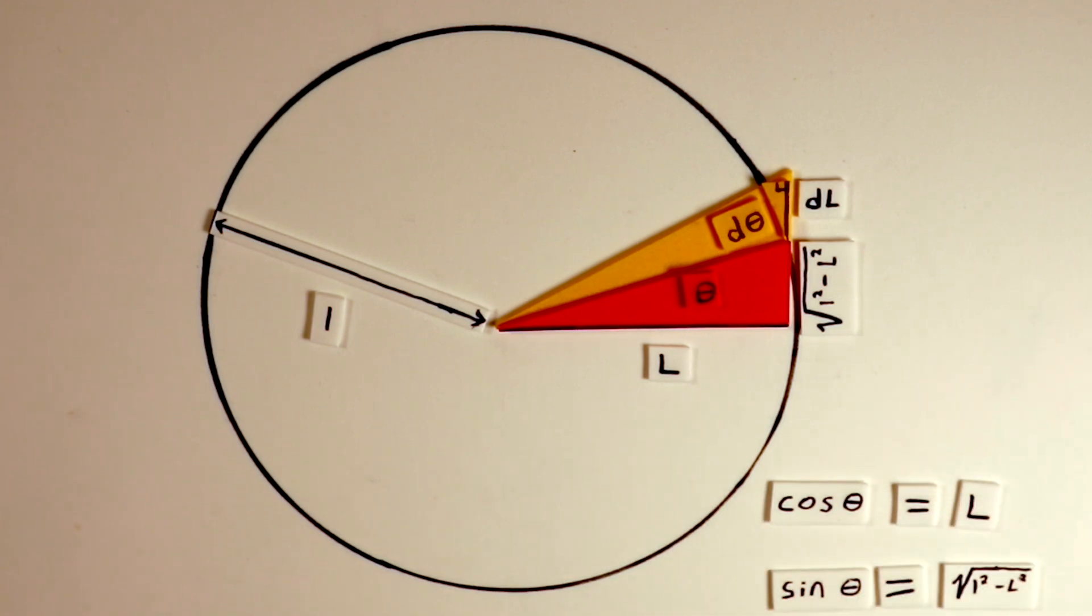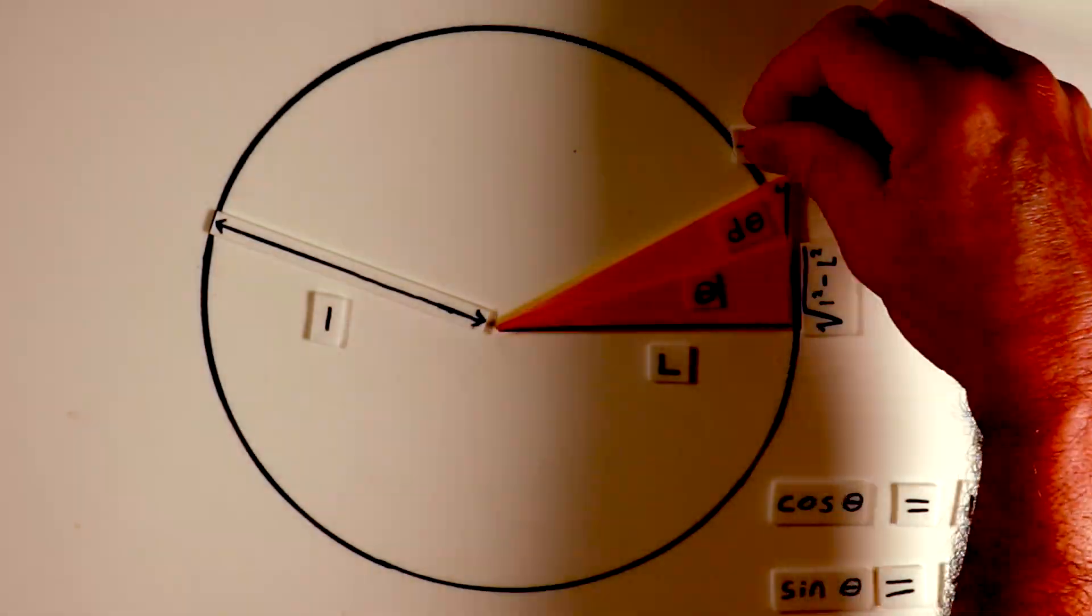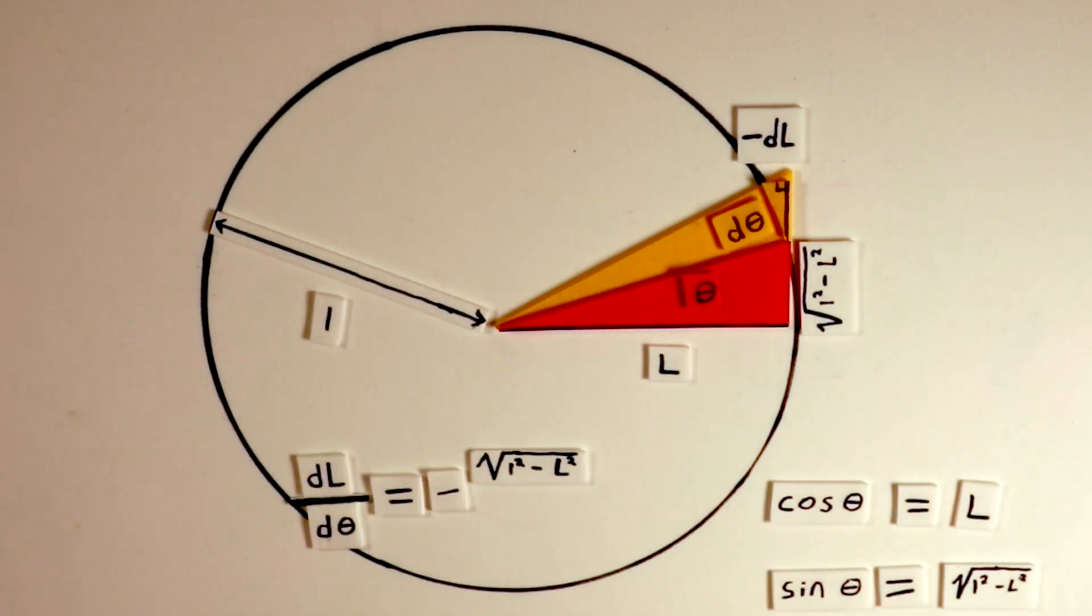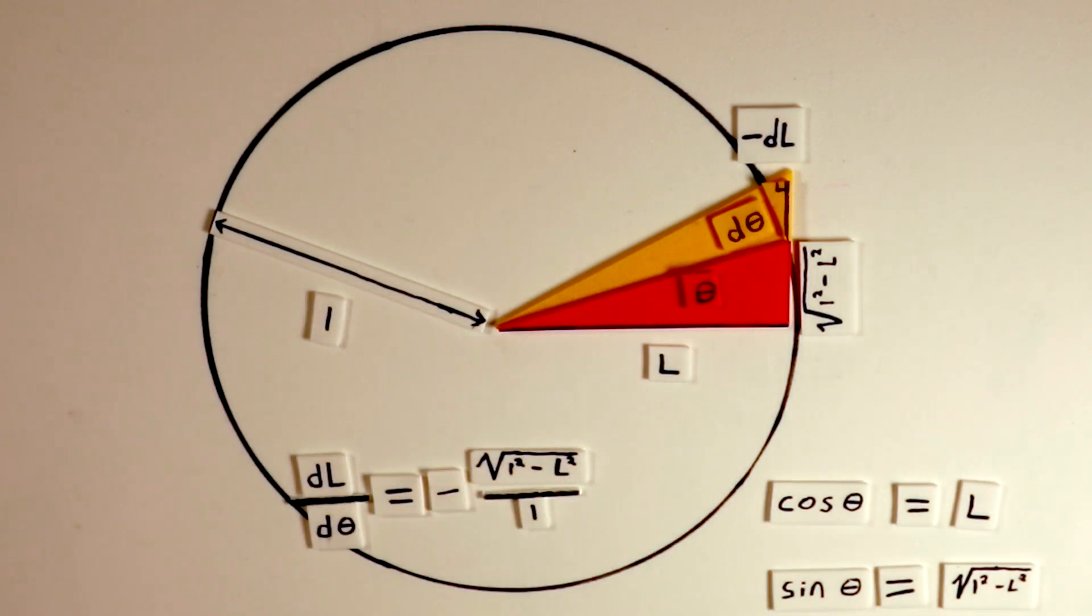In the tiny triangle formed as d theta approaches 0, the horizontal leg changes by minus dL, indicating a decrease, while the hypotenuse is still d theta. By the principles of similar triangles, as before, the ratio of dL to d theta, moving the negative to the other side, equals negative the square root of 1 squared minus L squared over 1, which corresponds to minus the sine of theta in our original configuration.